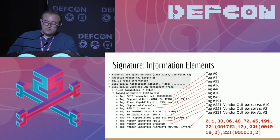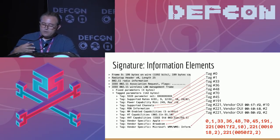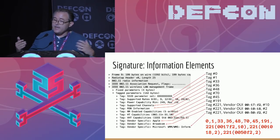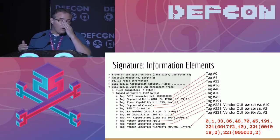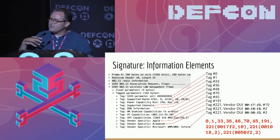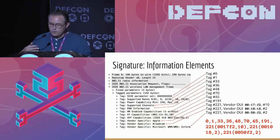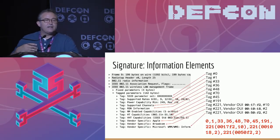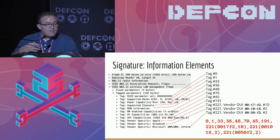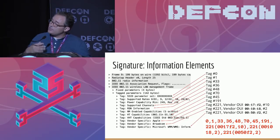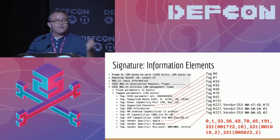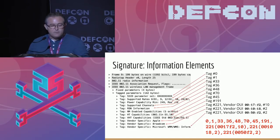Information elements are type, length, value tuples packed one after another in the management frame. They're all optional, though in practice a few are universal because Wi-Fi can't work without them. Each Wi-Fi standard has added more types of information elements. In the 802.11b days there were very few; .11g added a few more; .11n and AC added a bunch more, and so on.